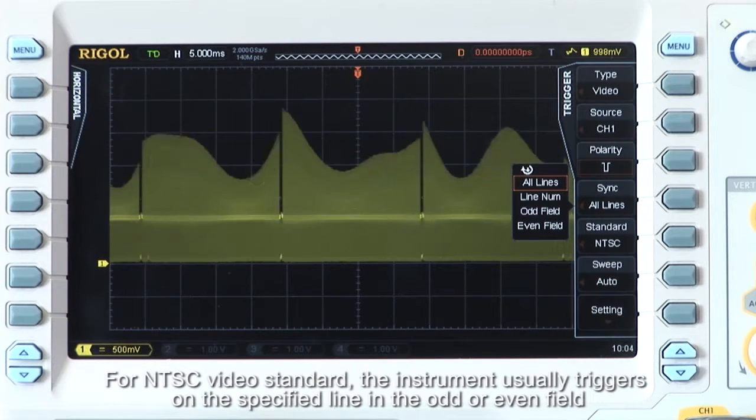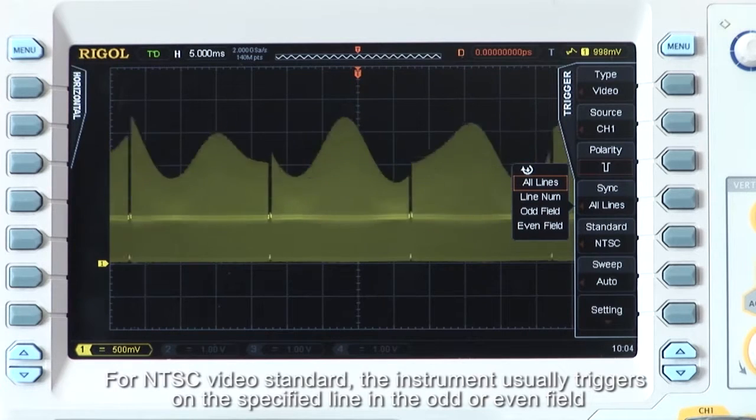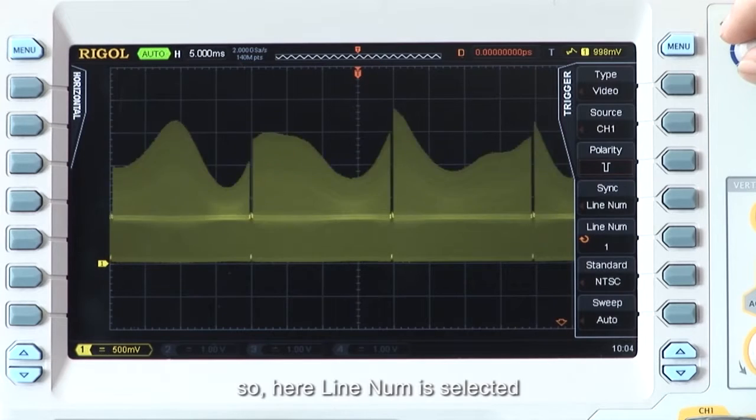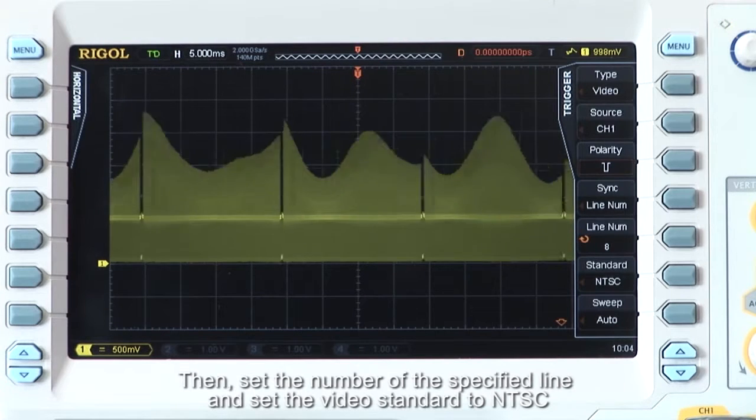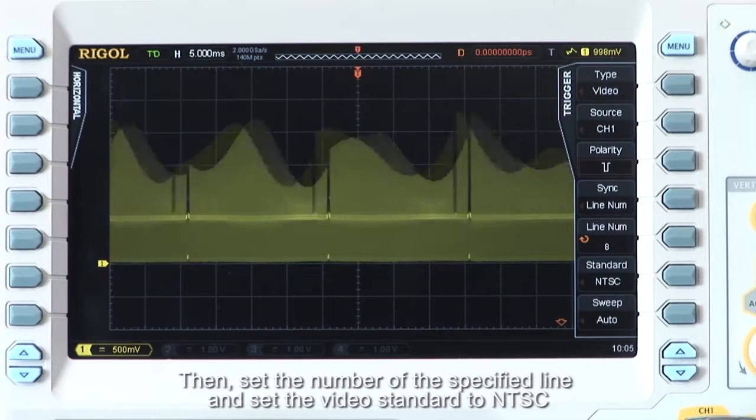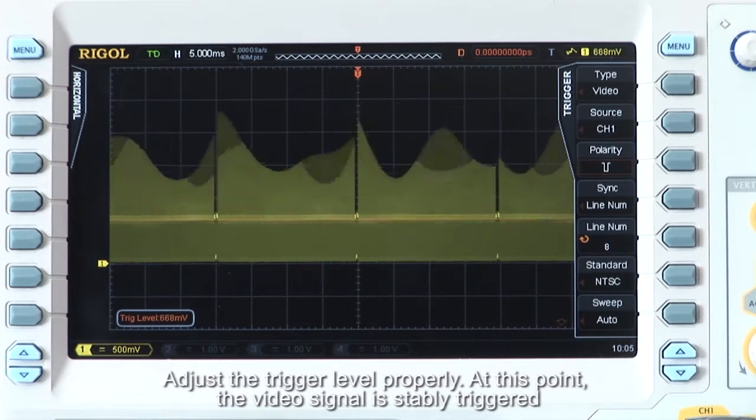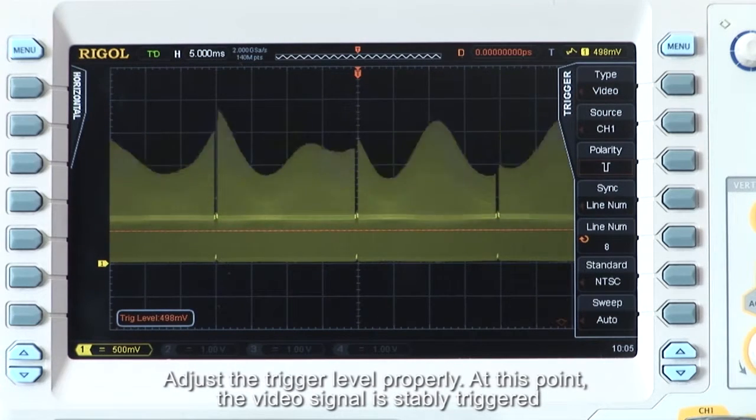For the NTSC video standard, the instrument usually triggers on the specified line in or the odd or even field, so here line numb is selected. Then set the number of the specified line and set the video standard to NTSC. Adjust the trigger level properly, and at this point the video signal is stably triggered.